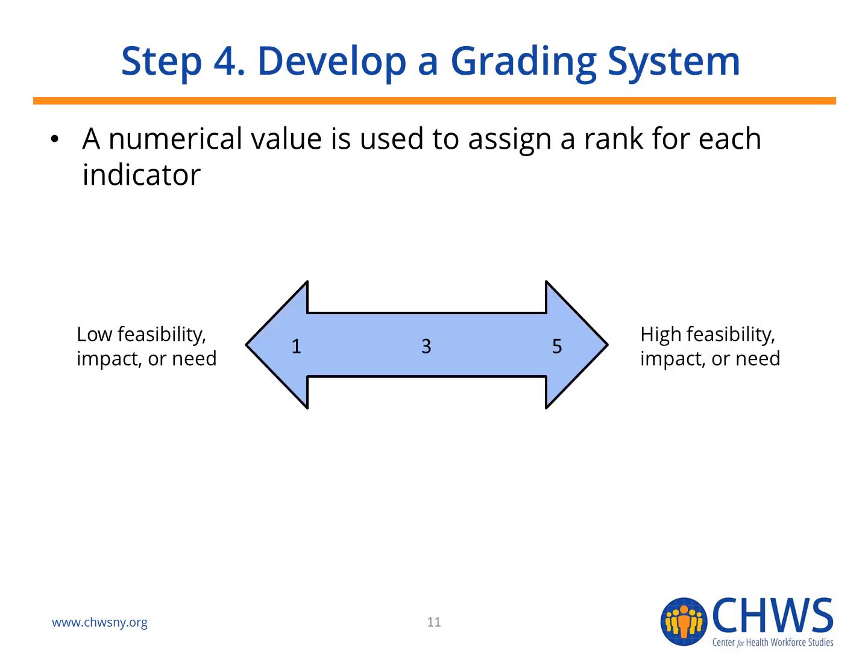The next step is to develop a grading system. Similar to the previous steps, consider the number of scoring categories and the range between the highest and lowest scores. In this example, we used three scores: 1, 3, and 5. The number of scoring categories and the distance between the highest and lowest score will impact how close or distant your aggregate scores are.